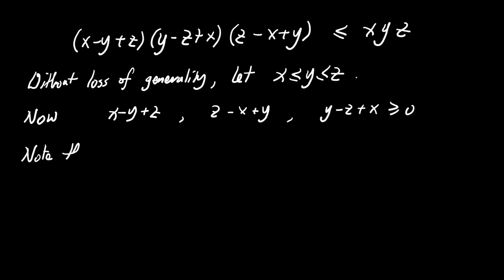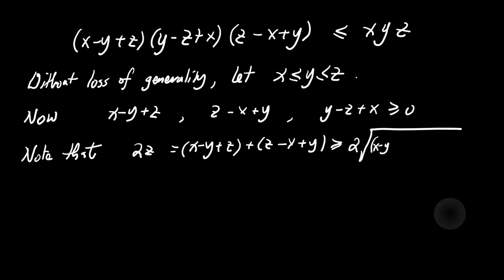Now, we will apply the arithmetic mean geometric mean inequality, or AM-GM inequality, to help us prove the inequality. We start by looking at the pairs of terms. For example, the sum of x minus y plus z and z minus x plus y is greater than or equal to 2 times the square root of their product. We do the same for the other terms.